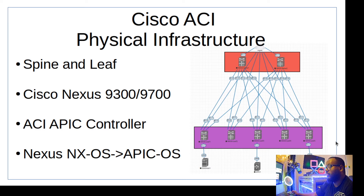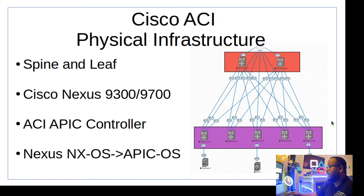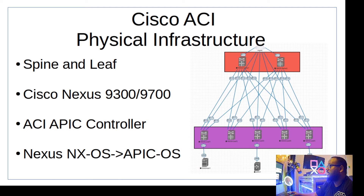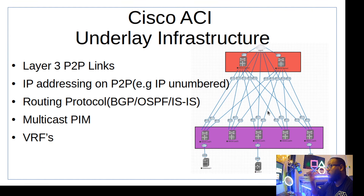The hardware we're running is Cisco Nexus 9300 or 9700, and we need the APIC controller — the physical device which is the control plane of the ACI fabric. We'll also have to convert the Nexus OS and migrate over to an APIC OS. Typically these Nexus switches run NX-OS, but in ACI mode we boot into the APIC OS, not the Nexus OS.